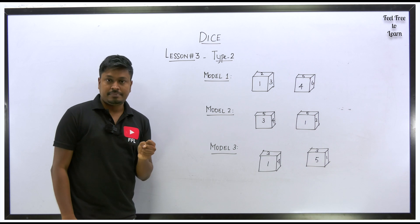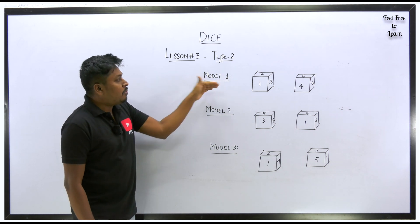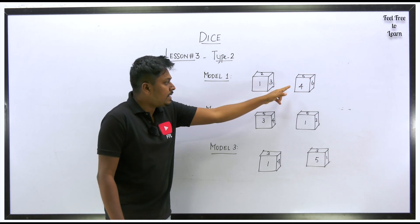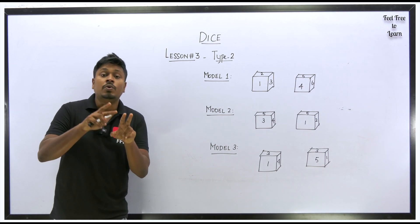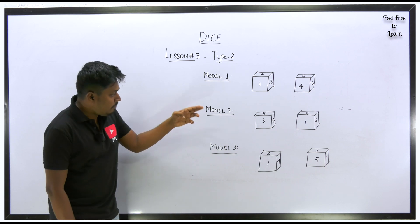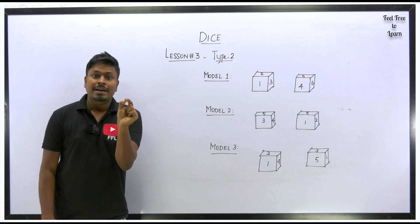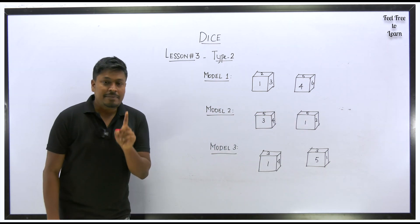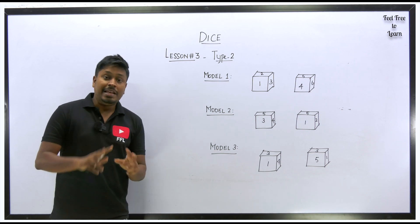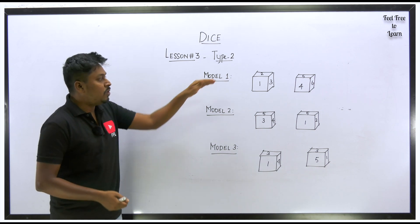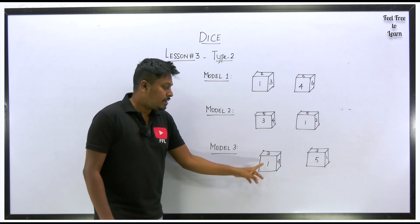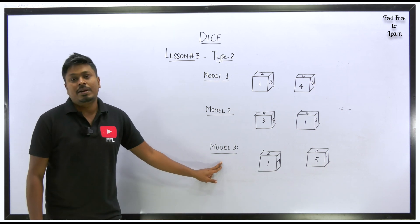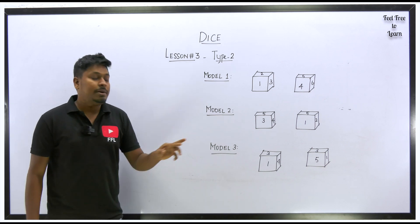There are three models in Type 2. Model 1: no common number in both diagrams — for example, one diagram shows 1, 2, 3 and the other shows 4, 5, 6. Model 2: only one common number in both diagrams — for example, five is common. Model 3: two common numbers in both diagrams — for example, three and one are common in both.